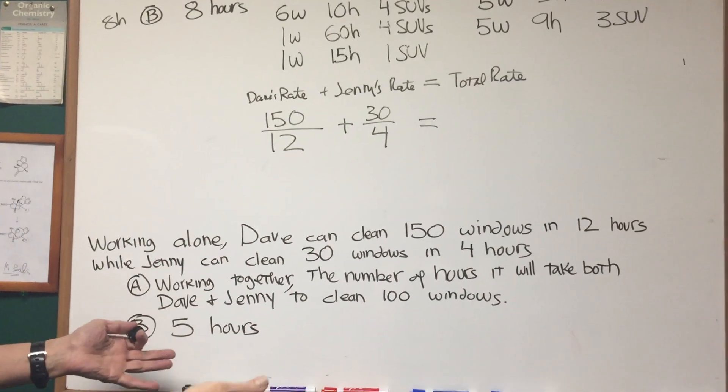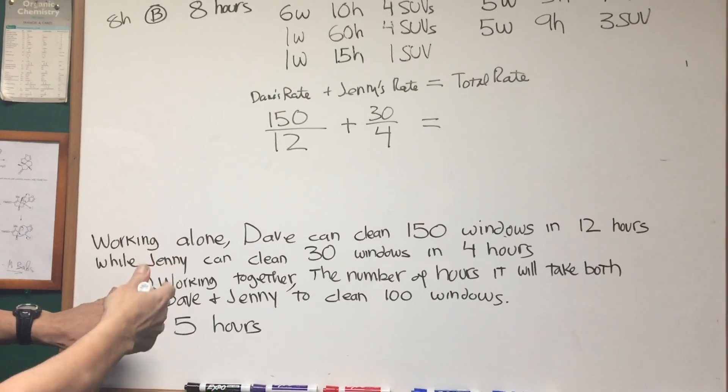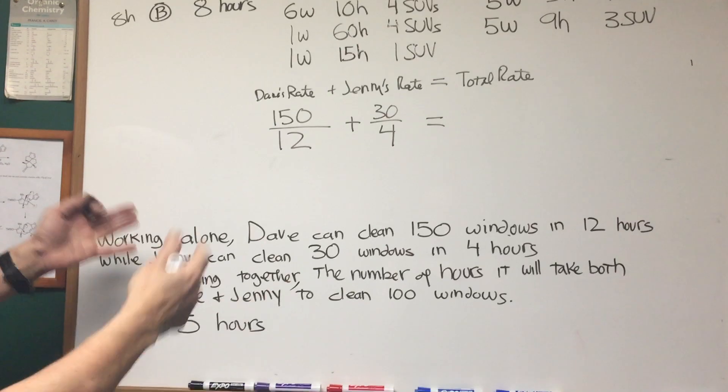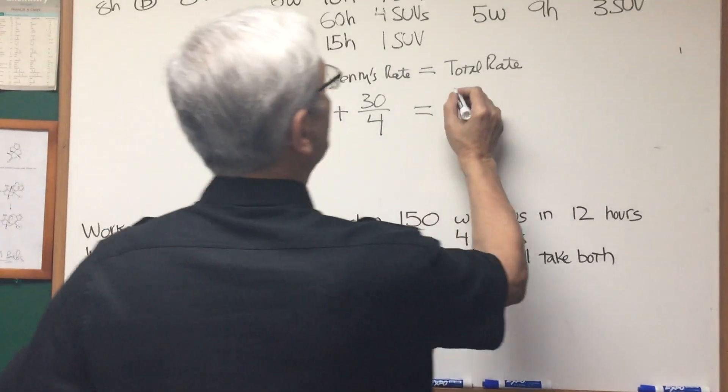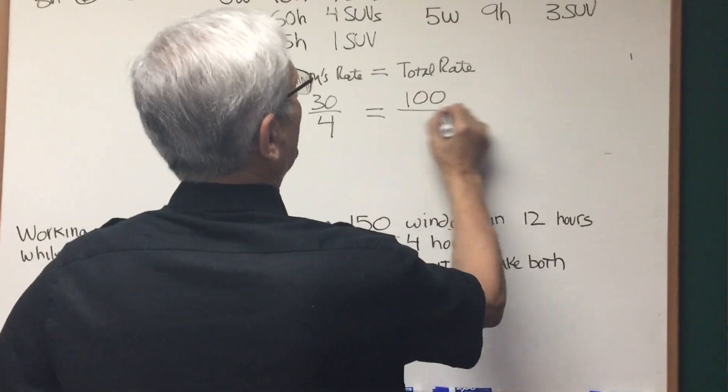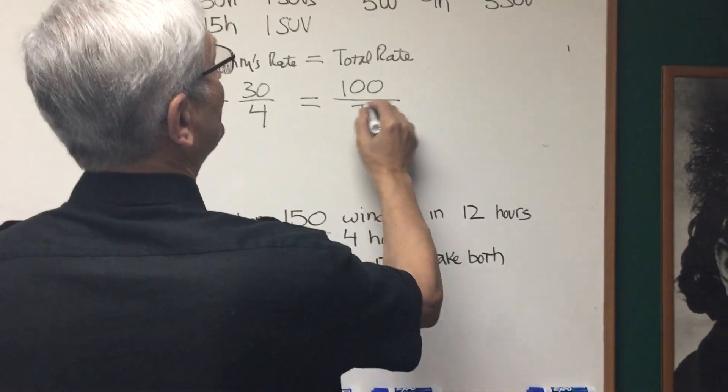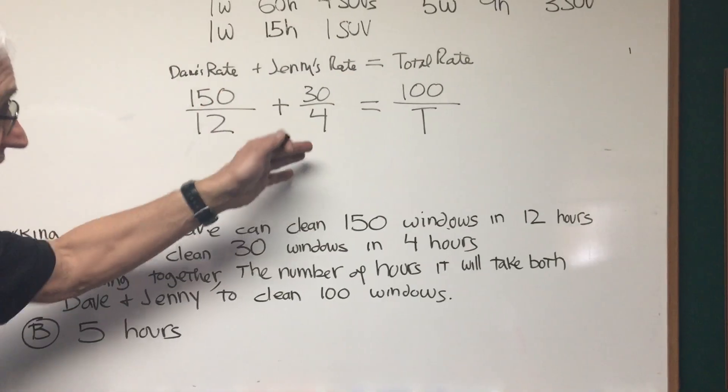Now we want to know, question A here, how long will it take for Dave and Jenny to clean 100 windows? Okay, so the sum of that is going to be equal to 100 windows in T hours, if they work together. How long will it take them to finish T hours?